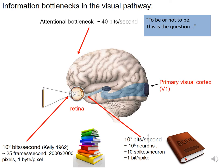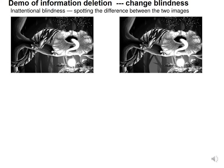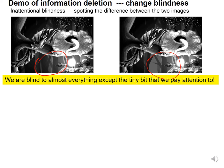This does not seem to agree with our impression, since we feel we can see everything in front of us clearly. But this is because we do not know what we do not see. Here is a demonstration of our blindness: can you see the difference between these two images? The difference is quite big — if you are not blind, you should see it immediately. Most people cannot see it within 10 seconds. Here it is — this portion is very different from that portion. Therefore, we are blind to almost everything in front of us except the tiny bit we pay attention to.